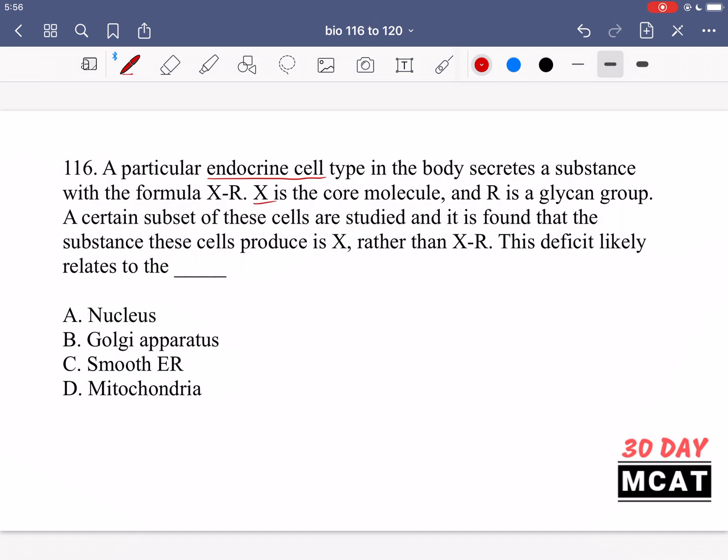This deficit likely relates to the blank. So there's an endocrine cell which means it secretes something, so that something has to be made first. It's a type of protein with a later modification to add a glycan group, which is a group of sugars. So what part of the cell, which cell organelle, is responsible for post-translational modifications, and in particular adding a glycan group to a protein?